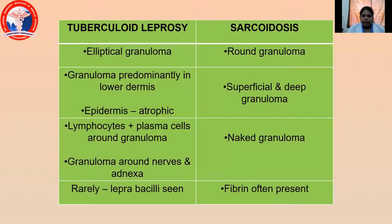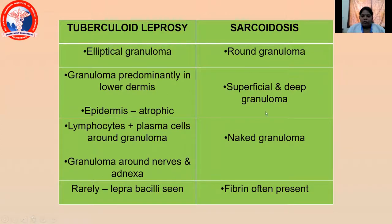What is the difference between tuberculoid leprosy and sarcoidosis? In tuberculoid leprosy, it is an elliptical or elongated granuloma, whereas in sarcoidosis, the granuloma is round. In tuberculoid leprosy, granuloma is predominantly seen in the lower dermis, whereas in sarcoidosis, it is usually seen in the superficial and deep dermis. In tuberculoid leprosy, the epidermis is atrophic. Lymphocytes and plasma cells around the granuloma are seen in tuberculoid leprosy, whereas in sarcoidosis, it is a naked granuloma not surrounded by lymphocytes and plasma cells. Granuloma surrounding nerves and adnexae are seen in tuberculoid leprosy. Lepra bacilli are very rarely seen in tuberculoid leprosy. In sarcoidosis, fibrin is often present.